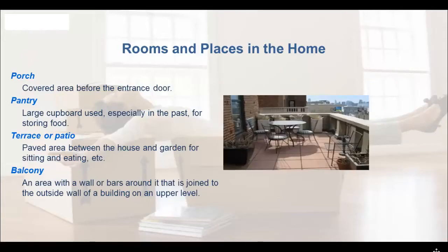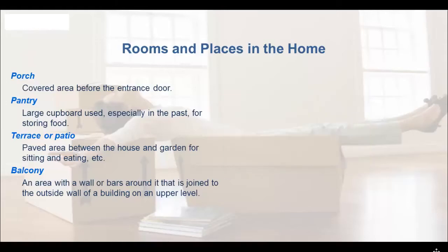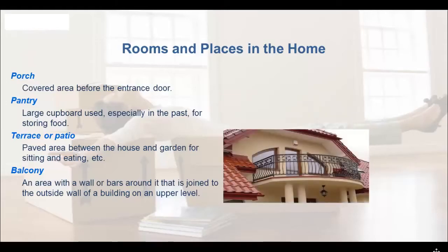A terrace or a patio is a paved area between the house and the garden for sitting and eating. And a balcony is an area with a wall or bars around it that is joined to the outside wall of a building on an upper level.